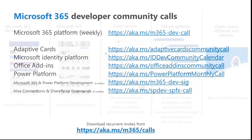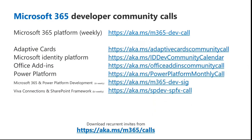Community calls are available aplenty. The Microsoft 365 Platform call is a weekly call with only Microsoft presenters, bringing information directly from Microsoft. There's also Adaptive Cards, Microsoft Identity Platform, Office Add-ins, a monthly Power Platform call, and the bi-weekly calls you're on now — the Microsoft 365 and Power Platform development call. Its sibling is the Viva Connections and SharePoint Framework call at the exact same time next week. Access all calls at aka.ms/m365/calls.